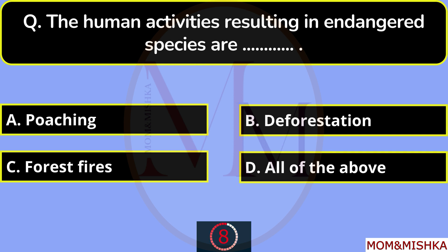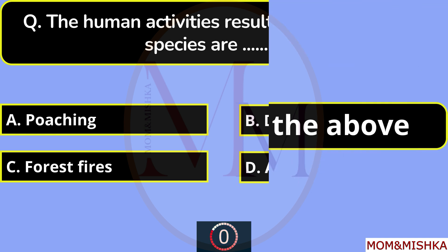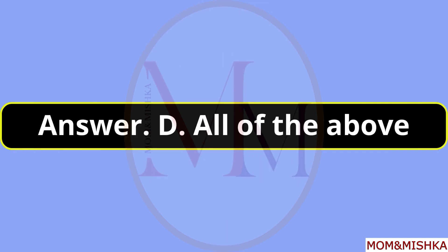The human activities resulting in endangered species are what? All of the above, option D — including poaching, deforestation, and forest fires.